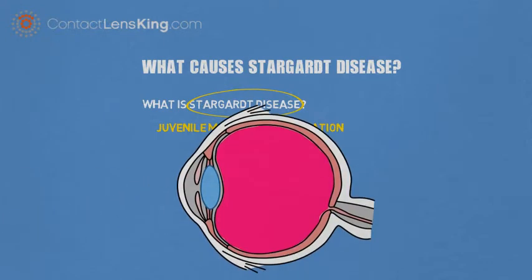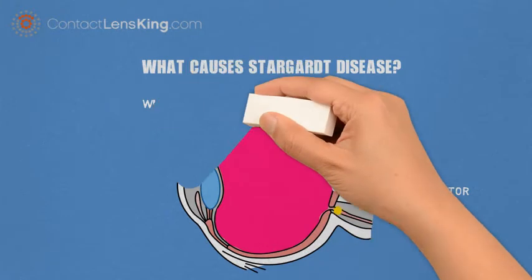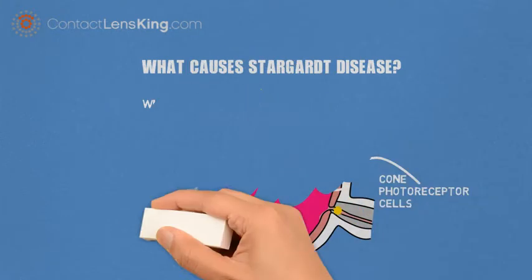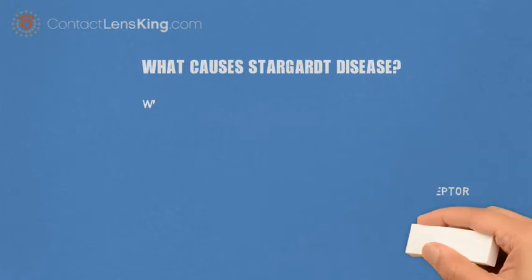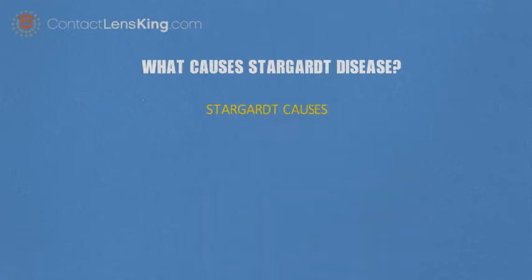This blockage directly affects the cone photoreceptor cells' ability to convert light and colors into electrical impulses and send them to the optic nerve. In this video we will cover what causes Stargardt.